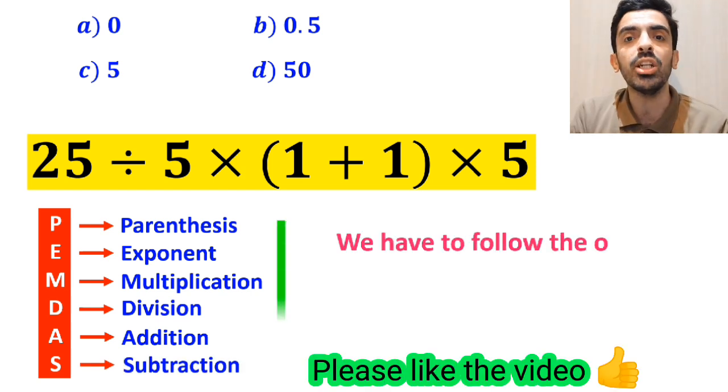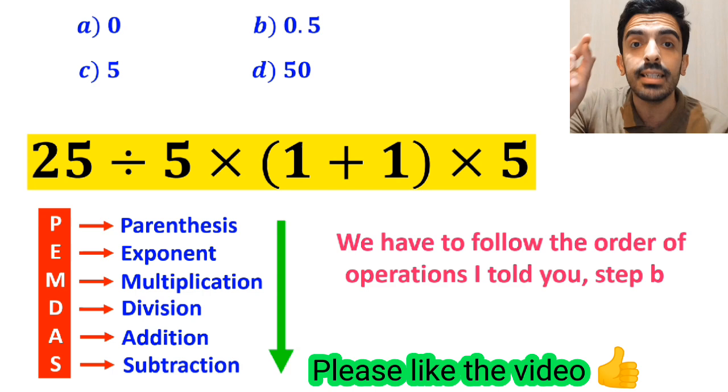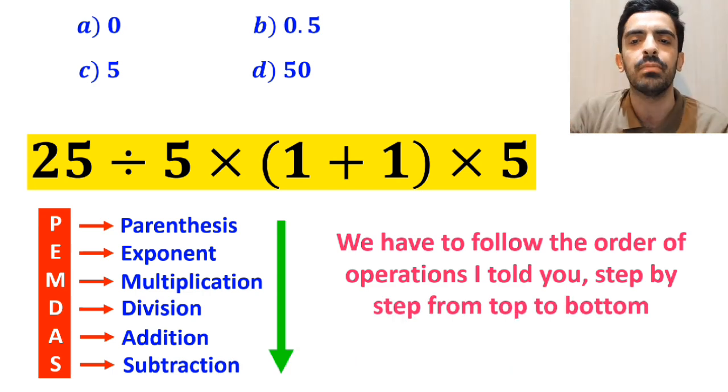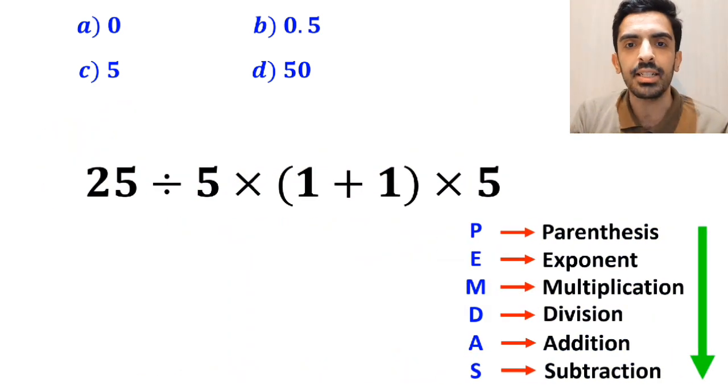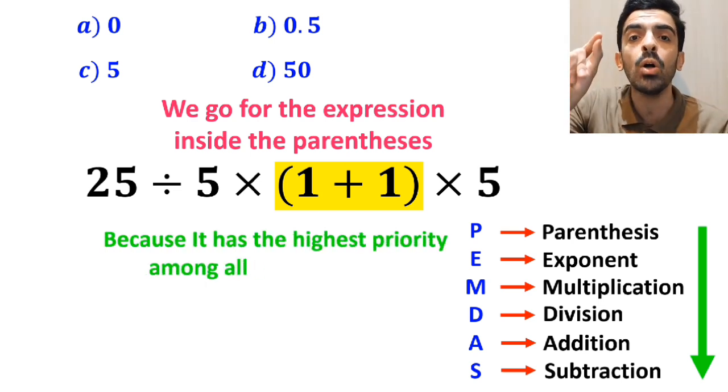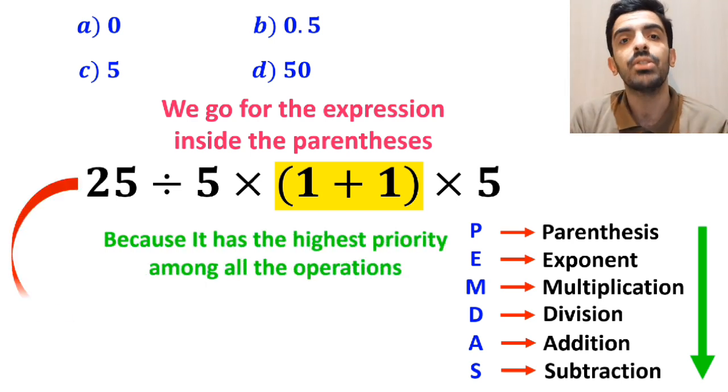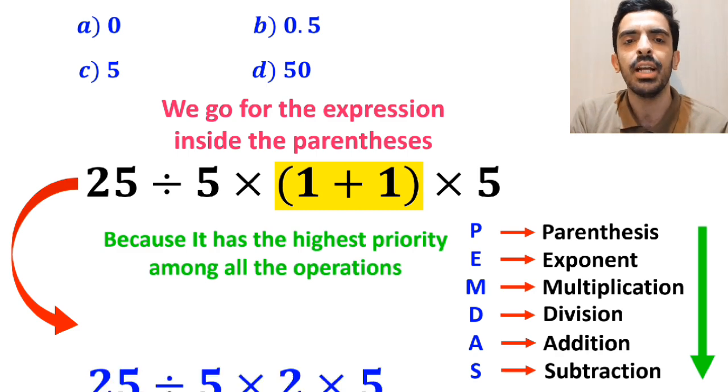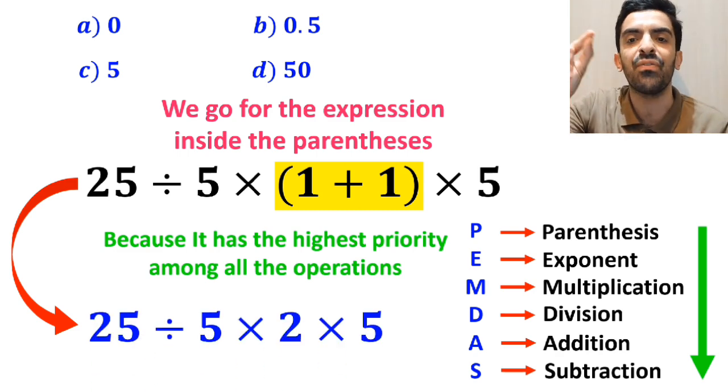We have to follow the order of operations I told you, step by step from top to bottom. Okay, and the first step, we go for the expression inside the parenthesis, because it has the highest priority among all the operations. So instead of this expression, we can write 25 divided by 5 times 2 and again multiply by 5.